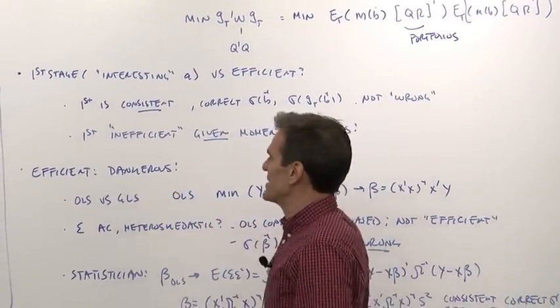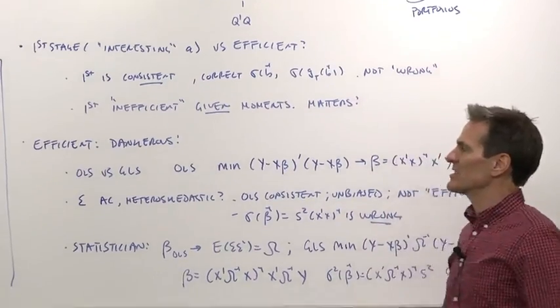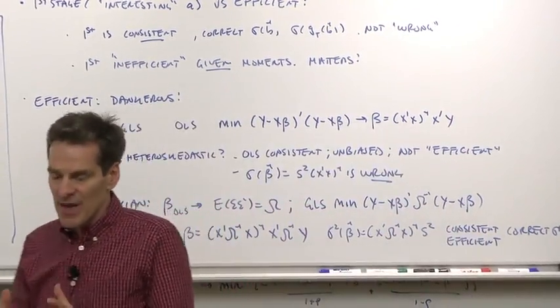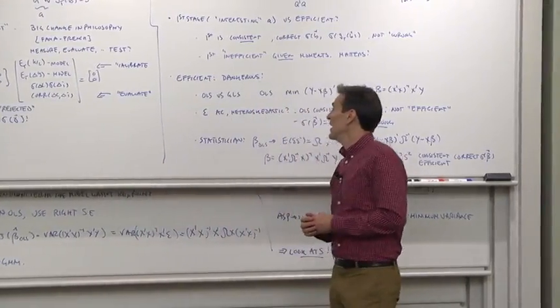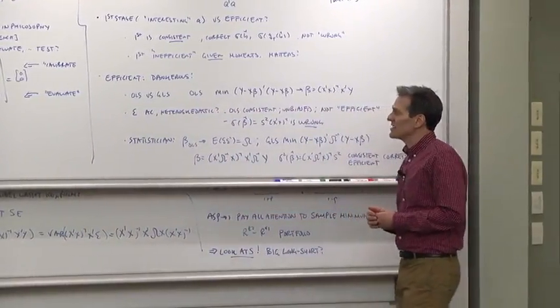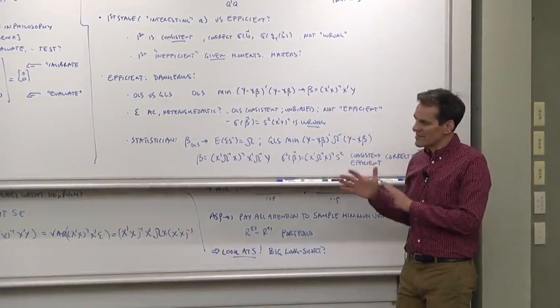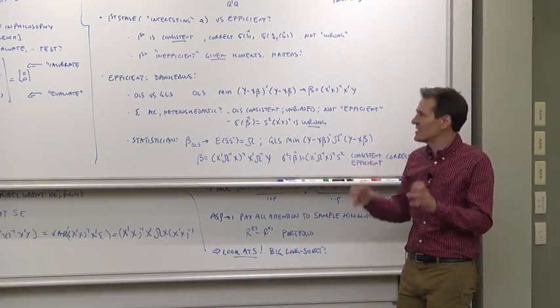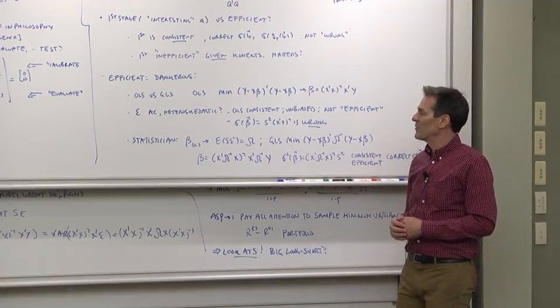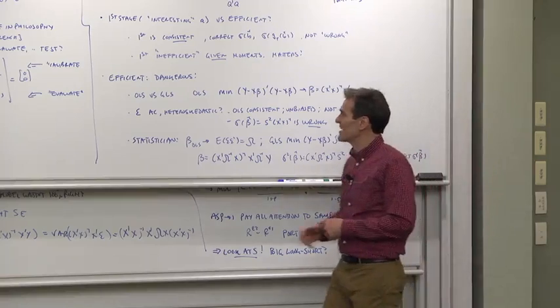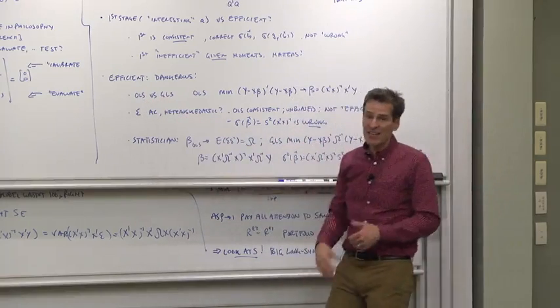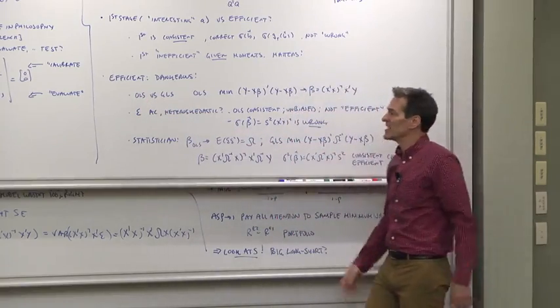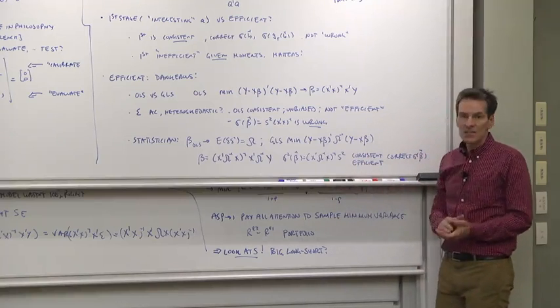The quest for efficiency can also be dangerous. In economics and econometrics, we've seen lots of cases where efficient estimators throw out the baby with the bathwater and lead to wrong answers. And that's why throughout economics, there's a trend away from formal efficiency and more towards robust estimation techniques that perform well. So a classic example is OLS versus GMLS, which is exactly what we're doing here. OLS is first stage GMM. GLS is second stage or efficient GMM. So let me remind you how that works.